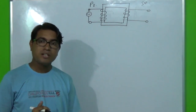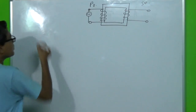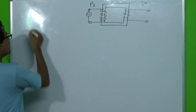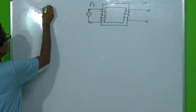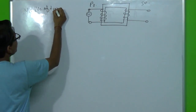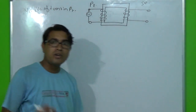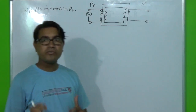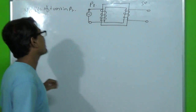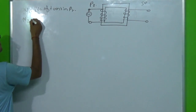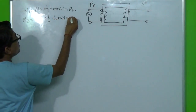We assume that the number of turns in the primary winding is N1 — N1 is the number of turns in primary. We also assume that the number of turns in the secondary winding is N2 — N2 is the number of turns in secondary.